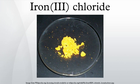Anhydrous iron(3) chloride may be prepared by union of the elements: 2Fe(s) + 3Cl2(g) → 2FeCl3(s). Solutions of iron(3) chloride are produced industrially both from iron and from ore, in a closed-loop process.